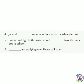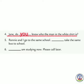Number 4: 'Jenny, do dash know who the man in the white shirt is?' Jenny is being spoken to directly — 'Jenny, do you know who the man in the white shirt is?' So the pronoun is 'you' — Y-O-U.